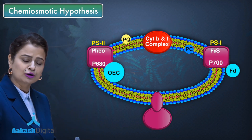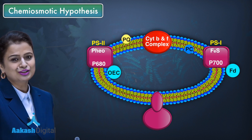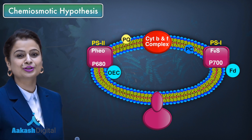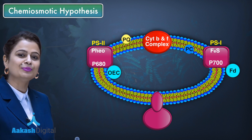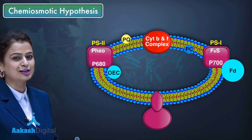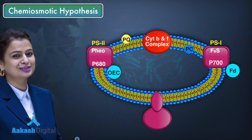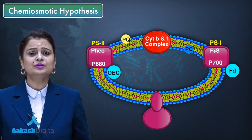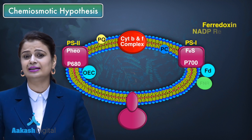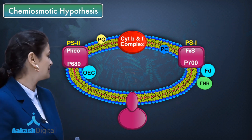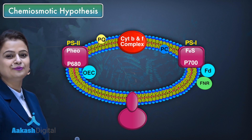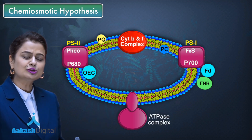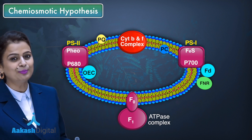The positions of the water-splitting complex and ferredoxin are totally different. The water-splitting complex is attached to photosystem 2 towards the inner side of the thylakoid membrane, while ferredoxin is attached to photosystem 1 towards the outer side. There is also an enzyme in the thylakoid membrane involved in synthesis of NADPH — that is NADP reductase. And the complex responsible for forming ATP is the ATPase complex, also known as the F0F1 complex.